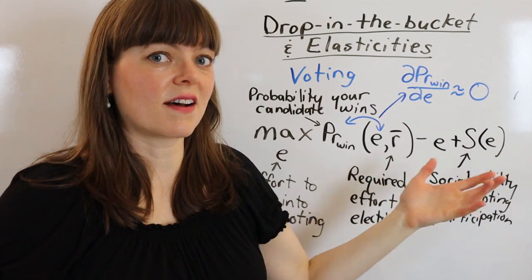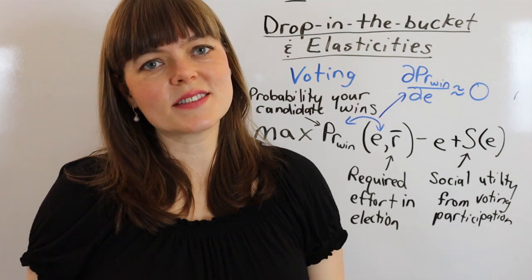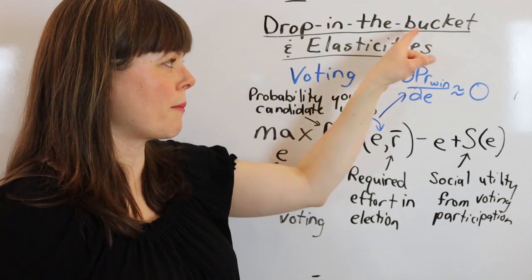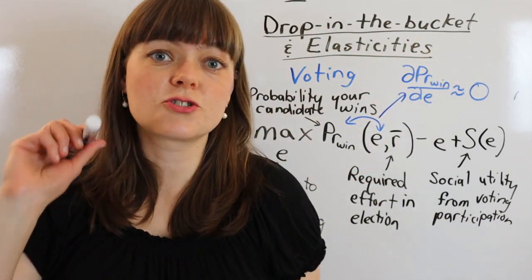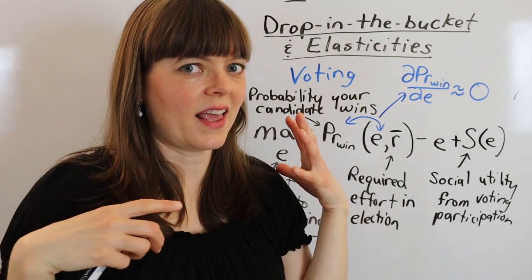Whereas this elasticity is not zero—this elasticity can be pretty big. So this is actually pretty common with public goods problems or problems where you have this drop-in-the-bucket problem. The drop-in-the-bucket portion is always going to be associated with something that has a near-zero elasticity involved.